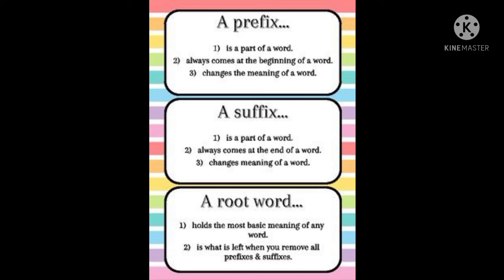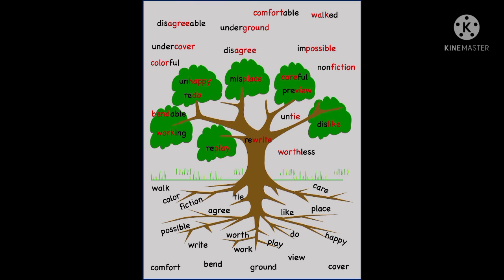Children, let's see some examples for prefixes and suffixes. Look at this picture — what do you see at the root? Some words are there. These words are called root words. Let's see the root words first: care, place, happy, cover, like, do, play, view, ground, comfort, possible, right, agree, fiction, walk, color. These are some of the root words.